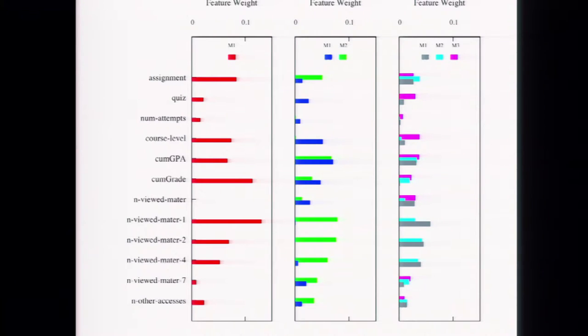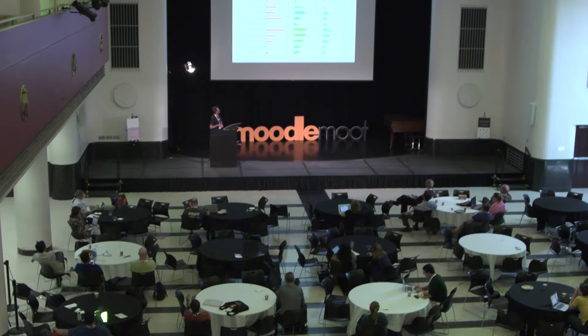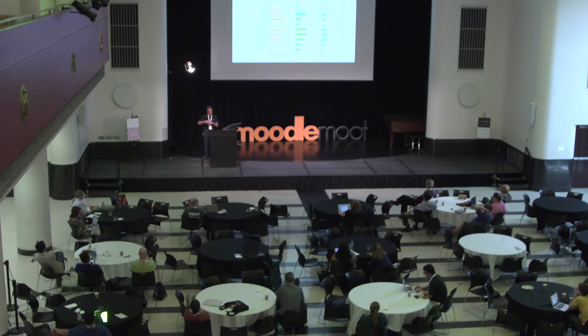You can see that different student populations have models that predict their grade based on different sets of features. As you go to three models and four models, it progressively becomes harder to interpret what's happening.